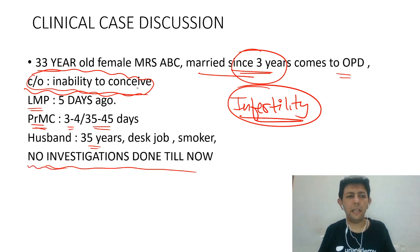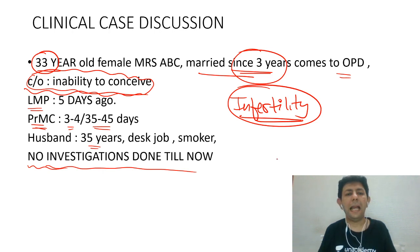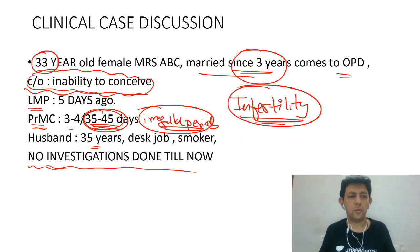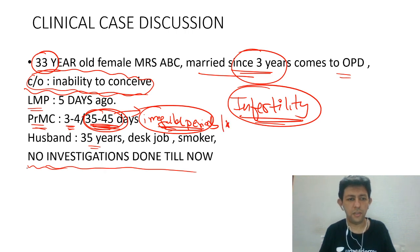She is 33 years old — age is slightly on the higher side. In females, fertility is very good up to 25 to 30 years; after 30, fertility starts dropping, and after 35 it drops further. The cycles are irregular — 35 to 45 days. Regular periods tell us the patient is ovulating, so irregular periods suggest we need to investigate. The husband is also a smoker, which is an important point.